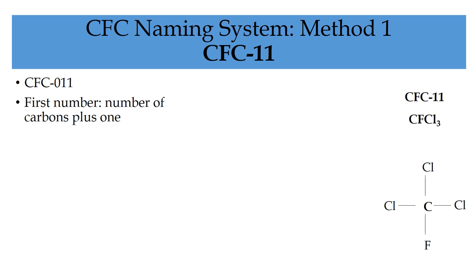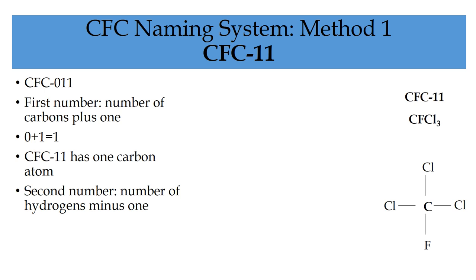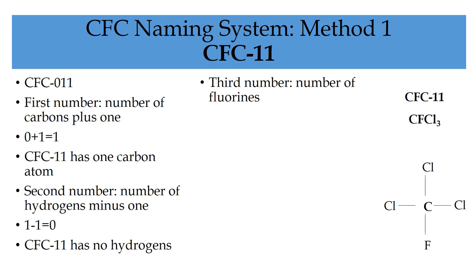As the first number represents the number of carbons plus one, CFC-11 contains zero plus one carbons, and so it has one carbon. The second number is the number of hydrogen atoms minus one, and therefore CFC-11 contains one minus one hydrogen atoms, and so it has no hydrogens. CFCs don't have any hydrogens, but this is the same numbering system used for HCFCs, which do have hydrogen atoms. The third number is the number of fluorines, and therefore CFC-11 has one fluorine.